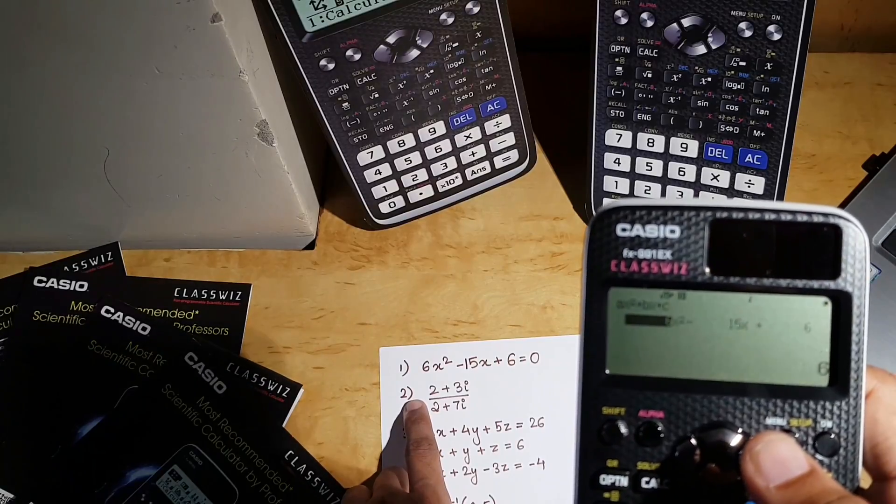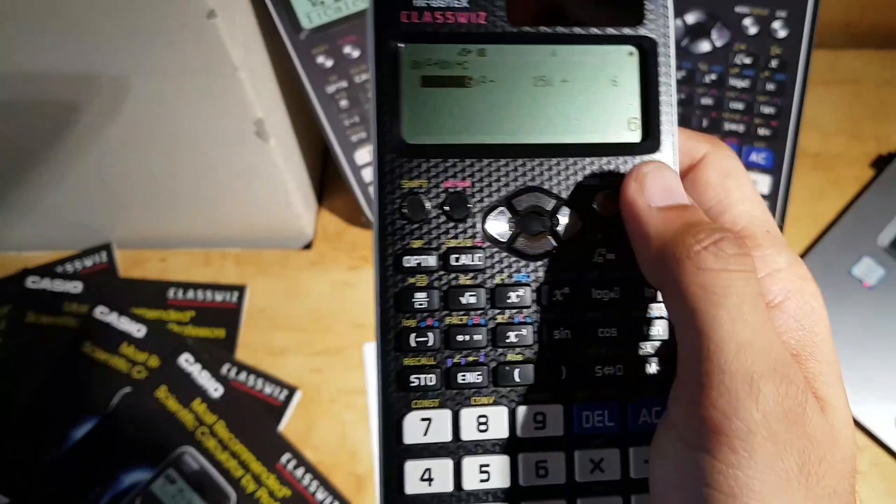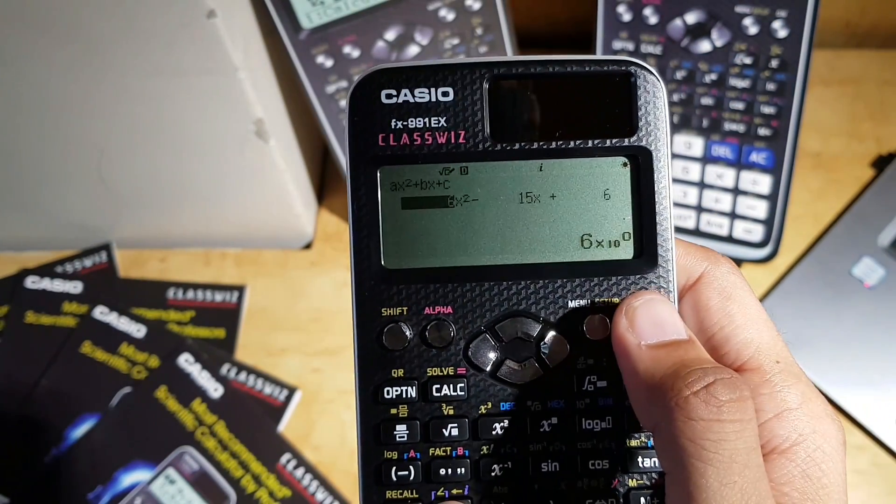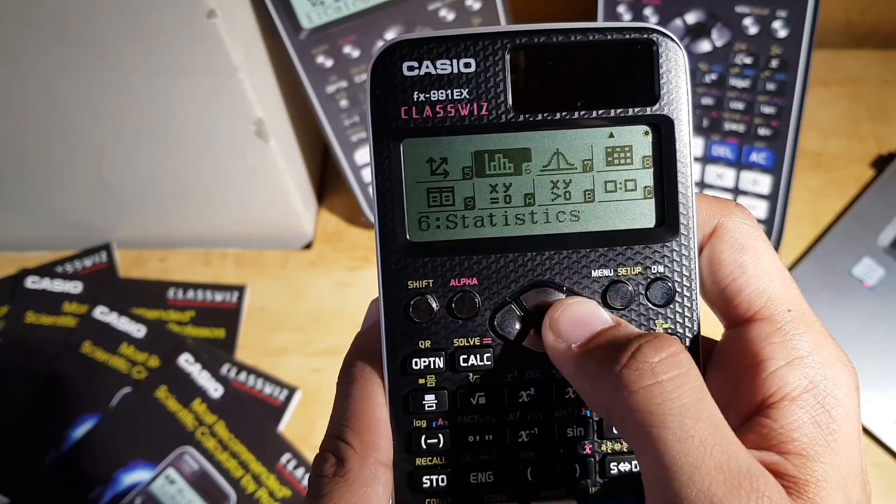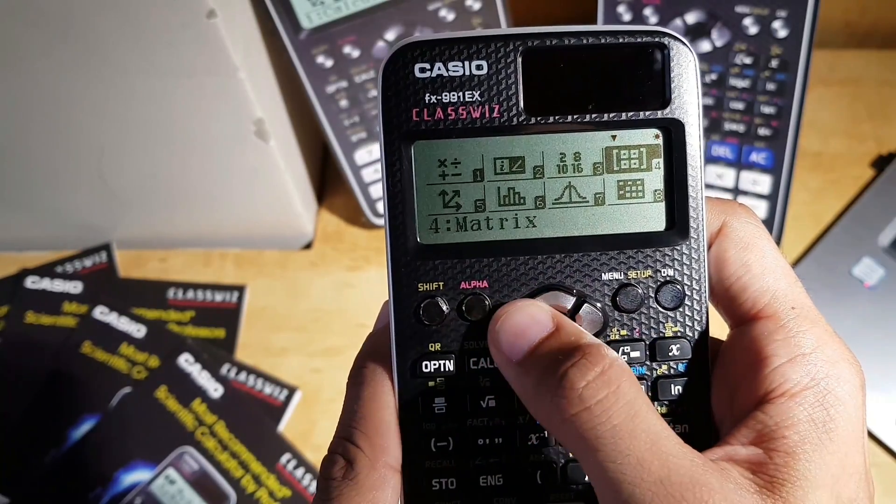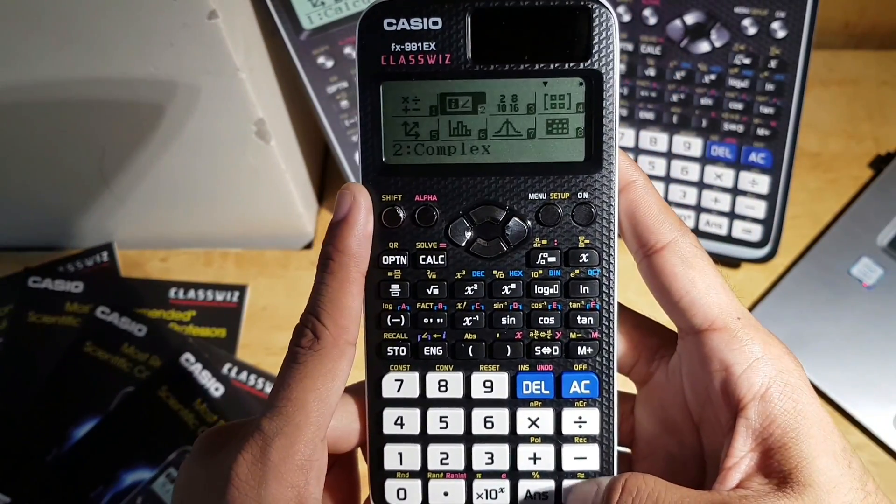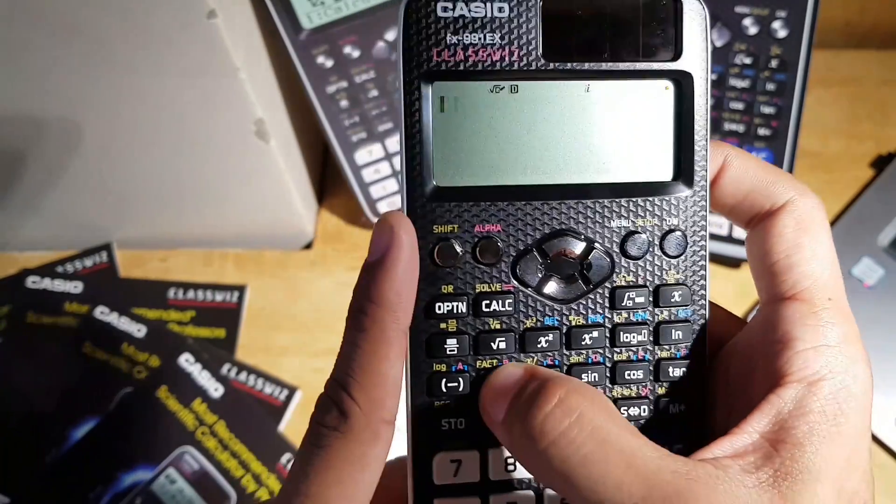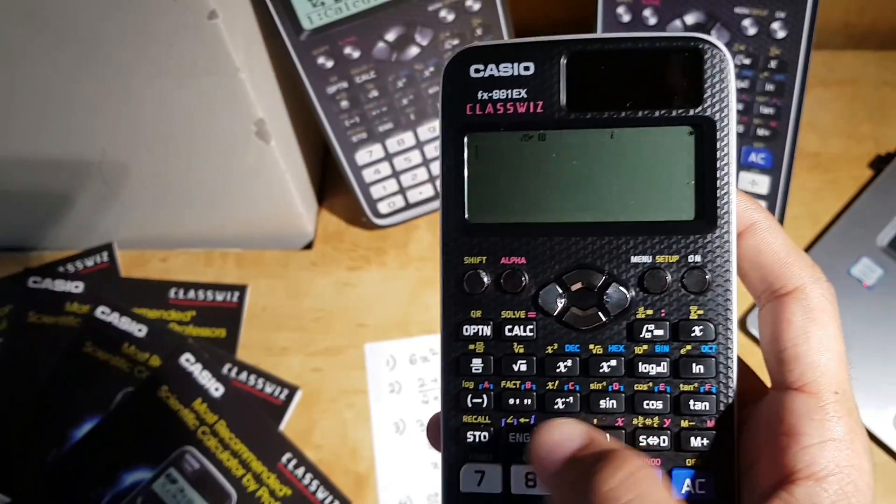We have an equation with a complex number. Here is the iota, but you will not be able to use it unless you go back and select the complex menu. So we are in the complex menu and see, iota is not coming. Yeah, here it is. I was pressing the wrong key.